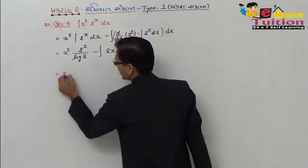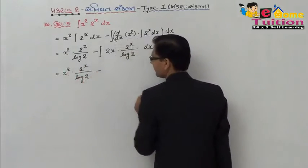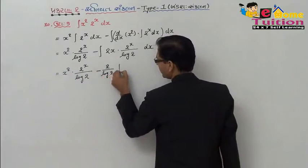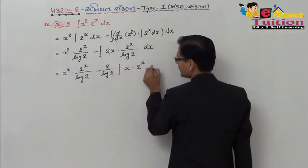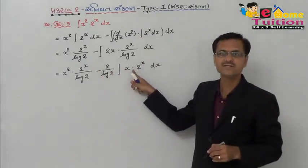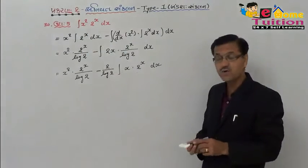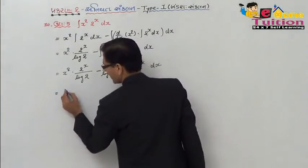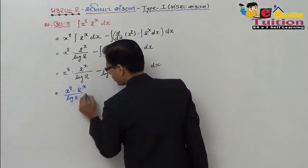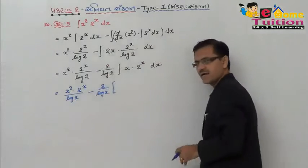log 2 · 2 raise to x dx. x then 2 raise to x upon log 2 minus. 2 upon log 2. dx.